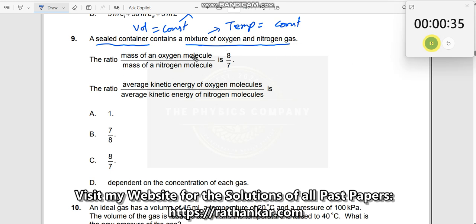The ratio of the mass of an oxygen molecule to the mass of a nitrogen molecule is 8 by 7, which is given. The question asks for the ratio of average kinetic energy of the oxygen molecules divided by average kinetic energy of the nitrogen molecules.